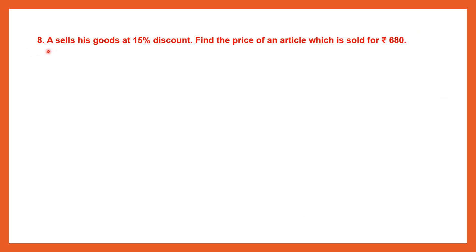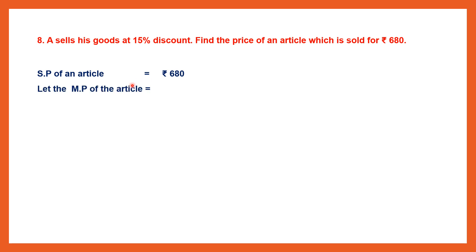Question 8. A seller sells his goods at 15% discount. Find the price of an article which is sold for Rs. 680. So we have the discount percent and the selling price, and we are asked to find the marked price — the initial price of the article. Let the marked price of the article be X, or you can take it as 100.